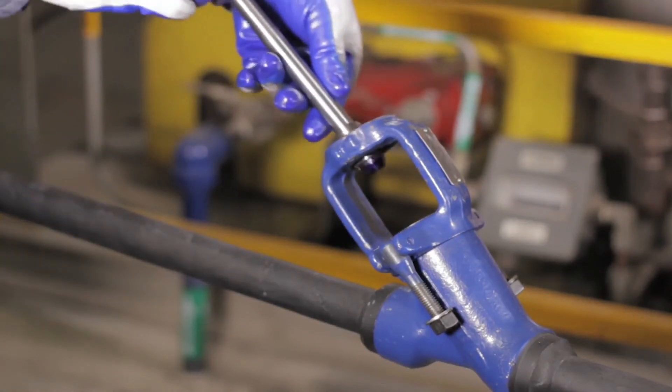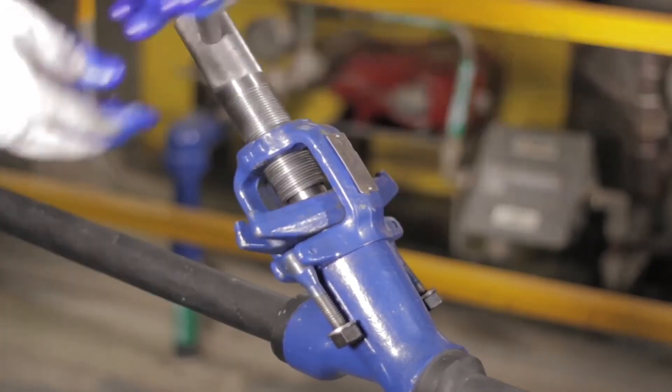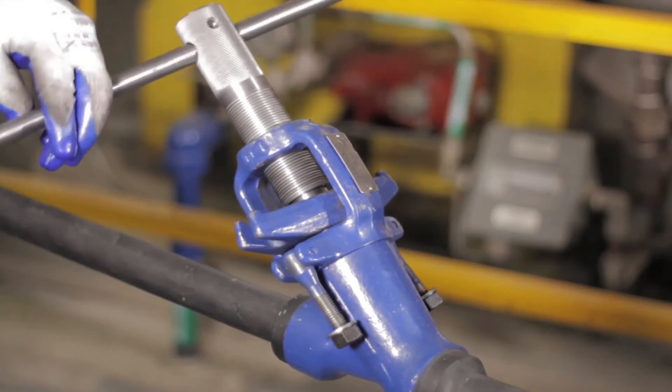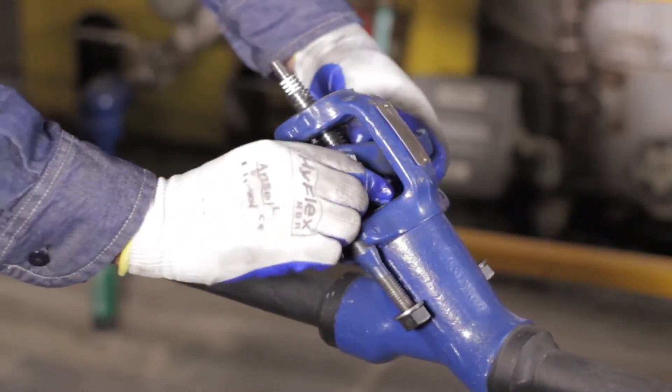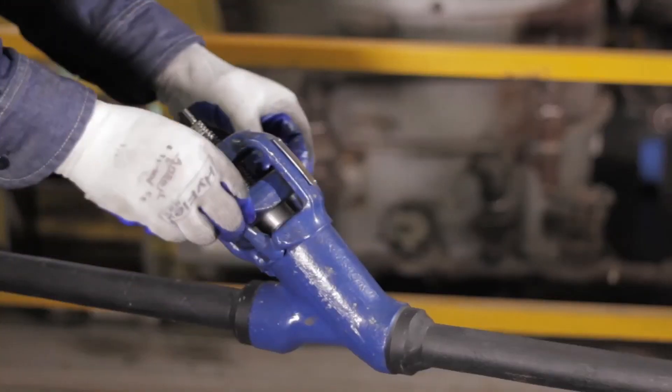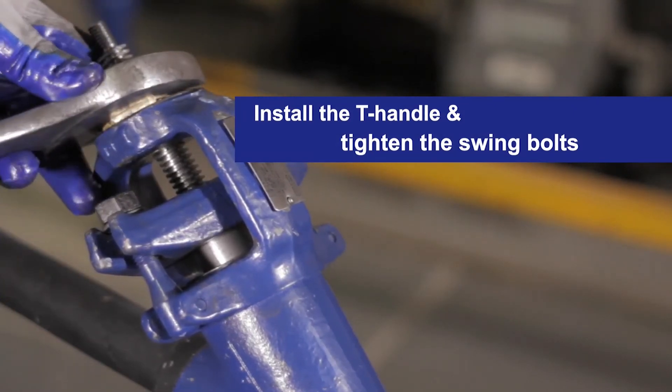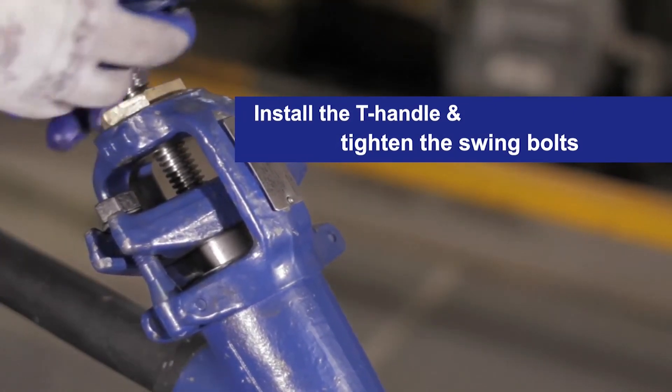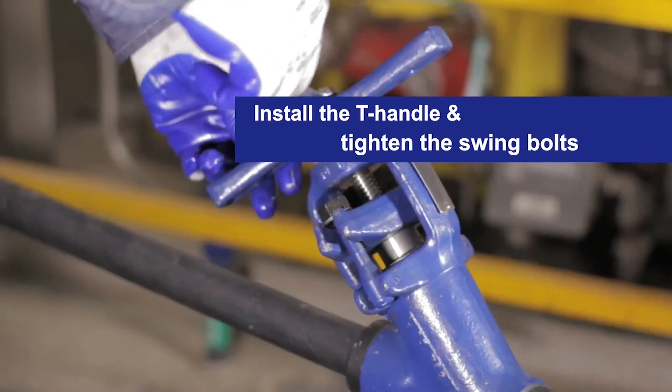For fixed backseat designs, the procedure goes like this. Insert the stem and disc assembly. Using the backseat removal tool and the guide, thread the backseat and tighten firmly. Remove the backseat removal tool and drop in the packing support ring. Install new packing. Insert the split gland bushing and turn it 90 degrees. Position the swing bolts and tighten the yoke bushing. Pin or re-tack the yoke bushing. Install the T-handle and tighten the swing bolts.